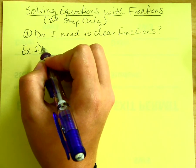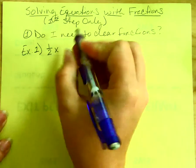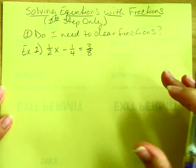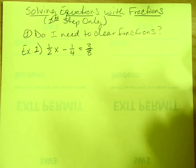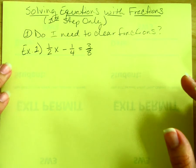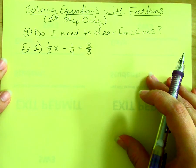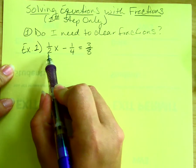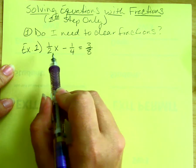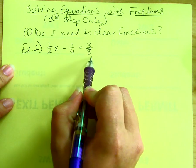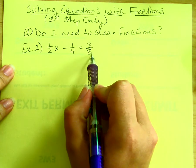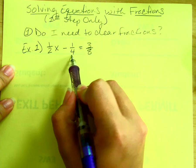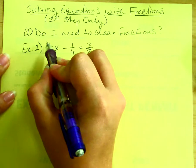For example one, we have the equation: one half x minus one fourth equals three eighths. This is a pretty straightforward two-step equation, but clearing fractions adds an extra step that saves us trouble in the long run. We're going to look at the denominators: I see a two, a four, and an eight. I want a common denominator that is divisible by all of them. Eight is divisible by eight, four, and two, so I'm going to clear fractions using positive eight.